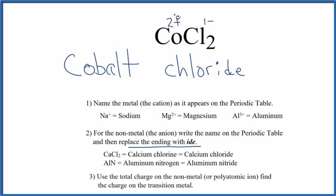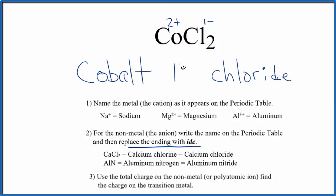Because we have this 2+, we write that between cobalt and chloride using a Roman numeral II in parentheses. So the name for CoCl₂ is cobalt(II) chloride.